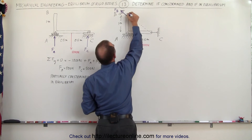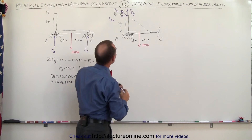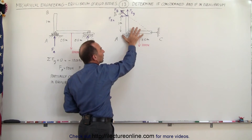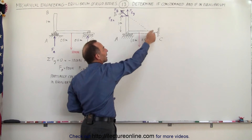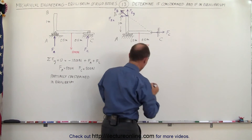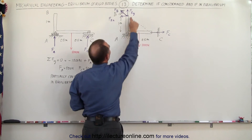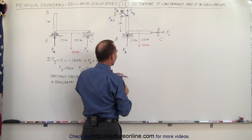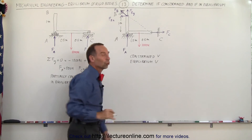The force at B has two components: a component in the vertical direction (F_By) and a component in the horizontal direction (F_Bx). It is the horizontal component that counteracts the moment caused by the thousand-Newton force. The thousand-Newton force causes clockwise rotation, and this horizontal component holds it in place. At point C, the force can only act in the horizontal direction, so that is F_C. Therefore this system is actually properly constrained and in equilibrium.